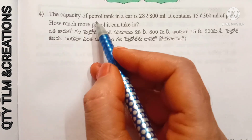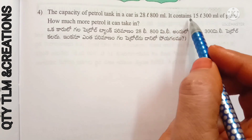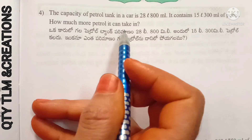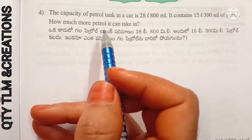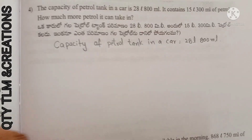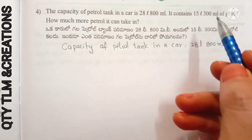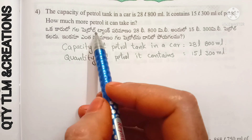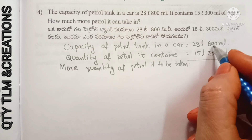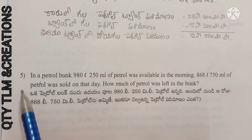Next question: the capacity of a petrol tank in a car is 28 liters 800 milliliters. It contains 15 liters 300 milliliters of petrol. How much more petrol can it take in? Capacity of the petrol tank equals 28 liters 800 milliliters. Quantity of petrol it contains equals 15 liters 300 milliliters. More quantity of petrol to be taken equals 13 liters 500 milliliters.